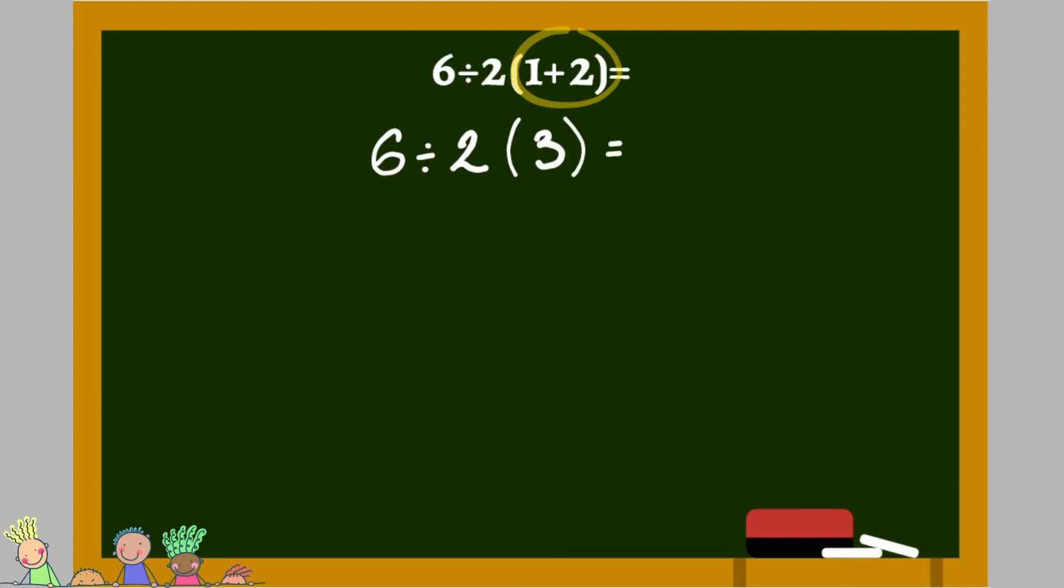If you see a number written outside the brackets with no operator, meaning mathematical symbol or sign, like in our case 2, open bracket, 3, close bracket, then that number should be multiplied by the contents inside the brackets. 2 with 3 in brackets is equivalent to 2 times 3. Now we have 6 divided by 2 multiplied by 3.